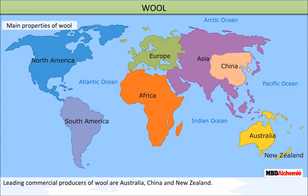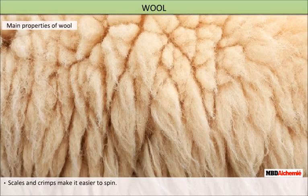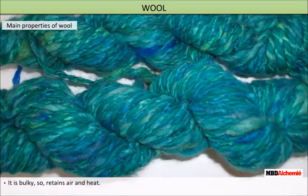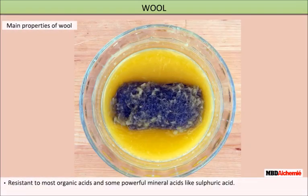The main properties of wool are: it absorbs moisture; scales and crimps make it easier to spin; it is bulky so it retains air and heat; and it is made up of keratin, making it resistant to most organic acids and some powerful mineral acids like sulfuric acid.